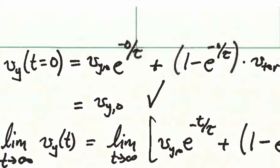At t equals 0, plugging into the right-hand side of our equation, we get the initial velocity times e to the 0, which is 1, plus the term 1 minus e to the 0 times the terminal velocity. Since e to the 0 is 1, that second term becomes 0, so the terminal velocity drops out and we recover our initial condition: vy at t equals 0 is just vy of 0.